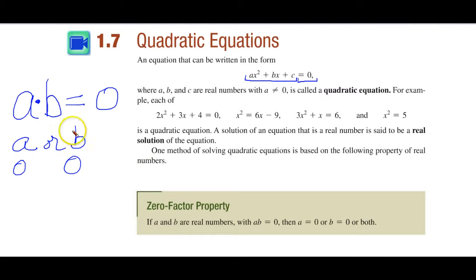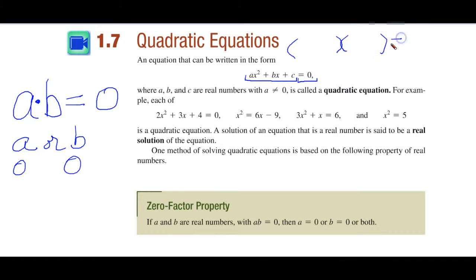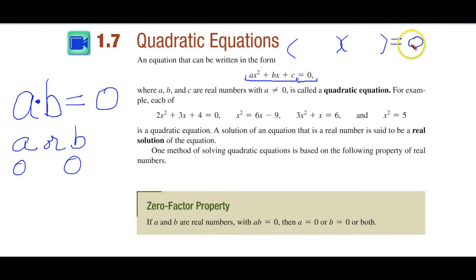We're going to take our trinomials that we did earlier, factor them, and equal them to zero. So this factor equals zero and this factor equals zero. Put a big star by this because this is an important process.